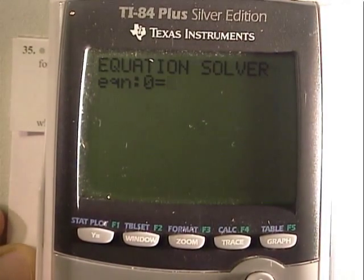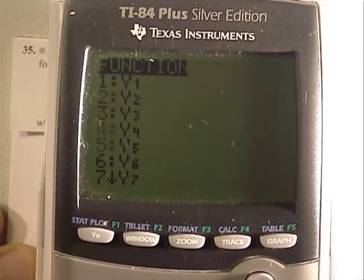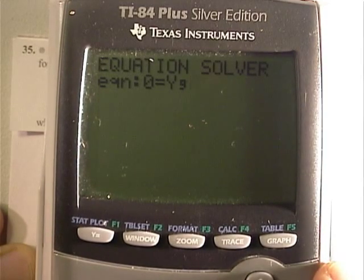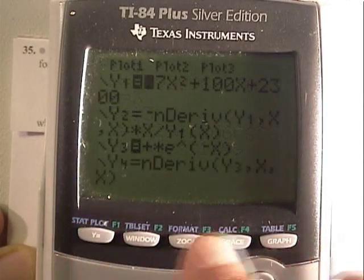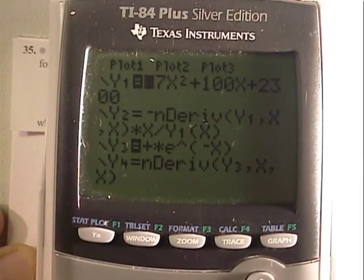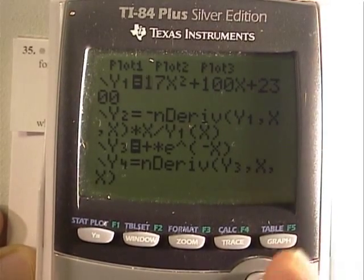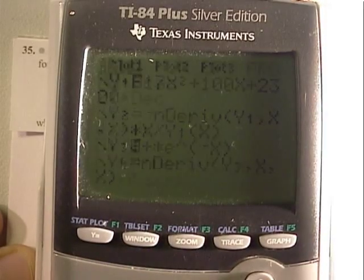And that happens to be in Y9. So, I'm going back. I'm clearing. I'm putting Y vars function. And now I'm loading up the average value function. The average value integral, rather. And up in Y1 is still my function that I'm interested in. That's the rate of change function. Now I'm trying to find the average rate of change function. So, back to solver here.